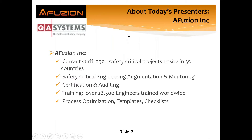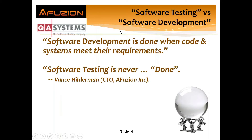eFusion is a small big company — the largest safety-critical services company for aviation in the world. We have about 70 engineers doing certification and development across many countries. We do augmentation, engineering outsourcing, mentoring, training, certification auditing for EASA, FAA, Transport Canada, CASA, and DASA. We've trained over 30,000 people — about three times more than all other trainers combined — and about 600 companies use our eFusion processes, frameworks, templates, and plans.